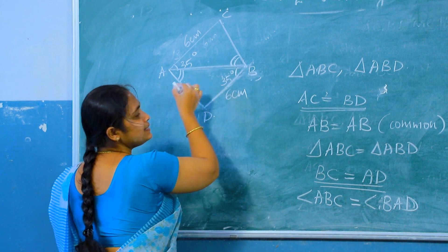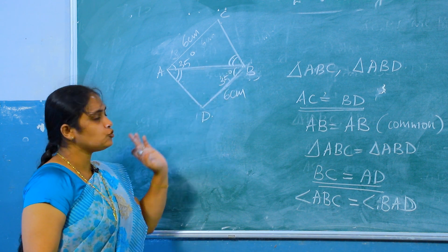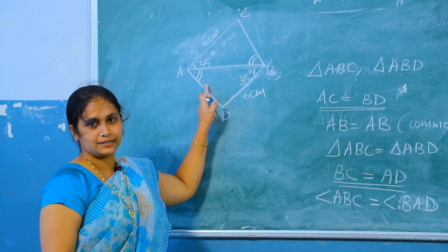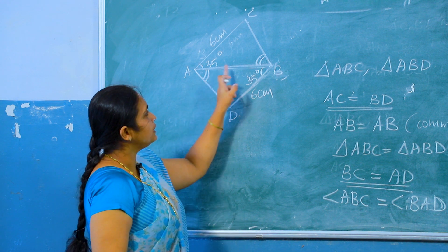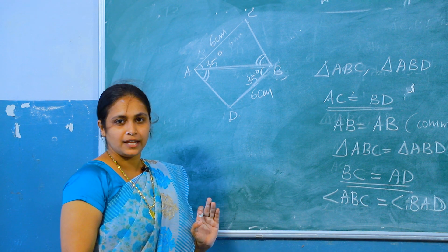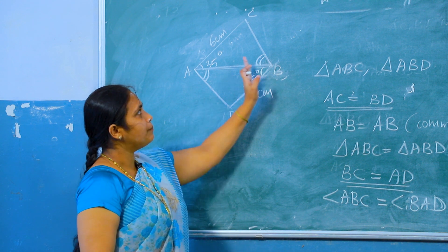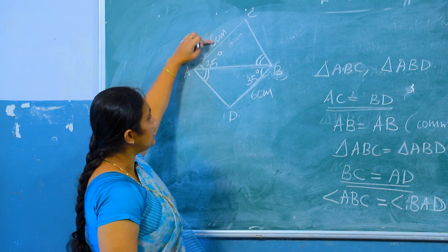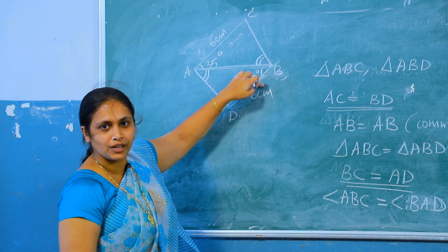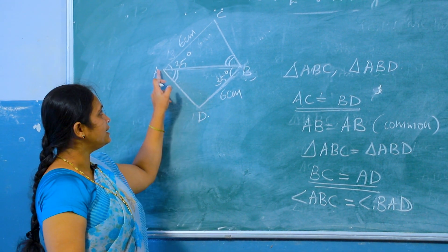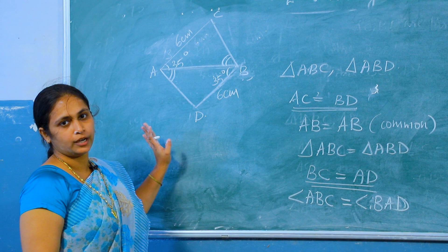These two angles are equal — that is, alternate angles are equal. Therefore, AD parallel to BC. Similarly, AC equal to BD and these alternate angles are also equal, therefore AC parallel to BD. Therefore, this quadrilateral ACBD is a parallelogram.